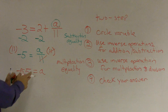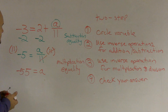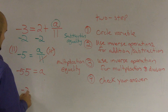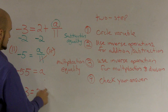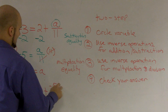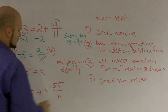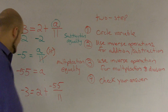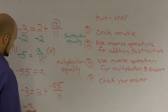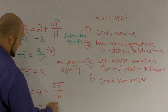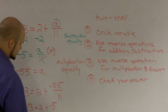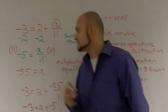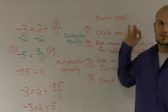So now I have negative 55 equals a. The last thing I need to do is double-check my answer. I'm going to substitute: negative 3 equals 2 plus negative 55 over 11. I take negative 55 divided by 11, which gives me negative 5. So negative 3 equals 2 plus negative 5, and negative 3 does indeed equal negative 3. Check my answer. That is a simple algorithm for you guys to use to solve a two-step equation.